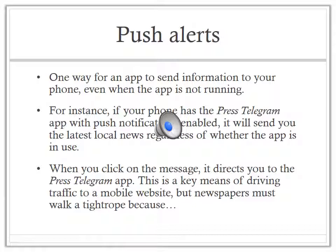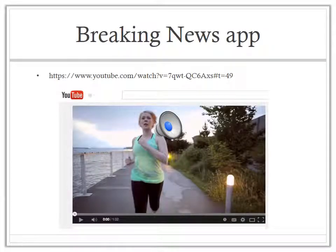A push alert is one way for an app to send information to your phone even when that app is not running. For instance, if you download the Long Beach Press-Telegram app and enable push notifications, that app will send you the latest local news whether or not the app is in use. You click the message and are directed to the app — this is a key means of driving traffic to mobile websites. However, newspapers have to walk a tightrope because push alerts can be very annoying, as you'll see in the commercial for the Breaking News app posted on Beachboard.